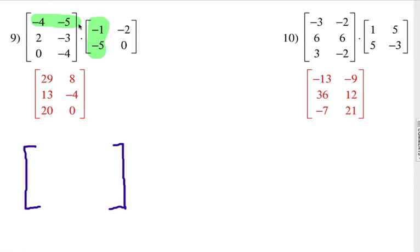So we're going to do negative 4 times negative 1, which is 4, plus negative 5 times negative 5, which is 25. So it would be 4 plus 25. That would be 29 right there. Next we have negative 4 times negative 2, which is 8. And negative 5 times negative 1, which is negative 2. Obviously that will be 8.